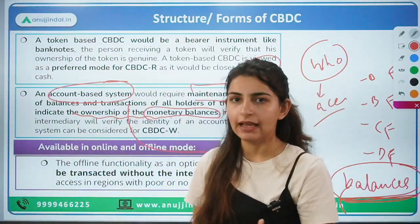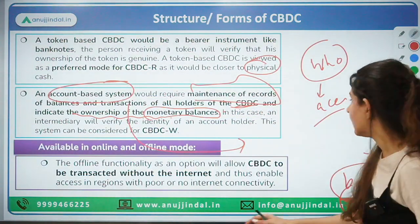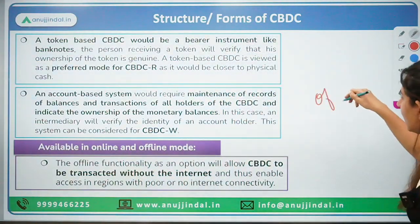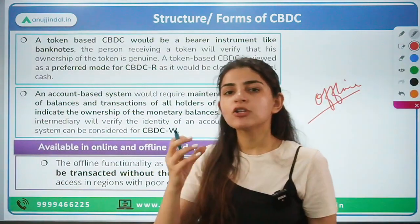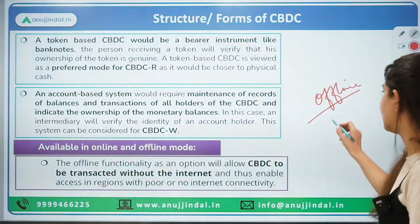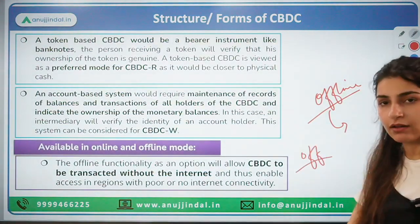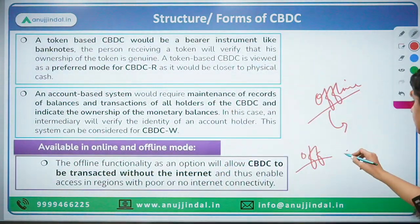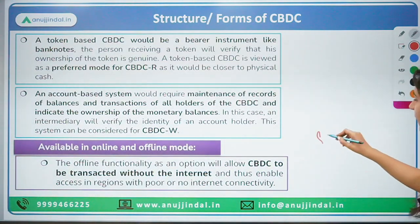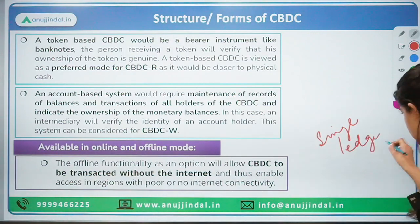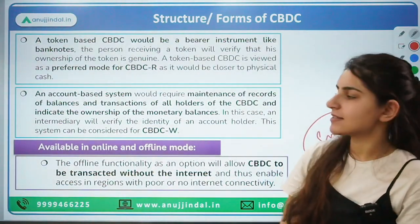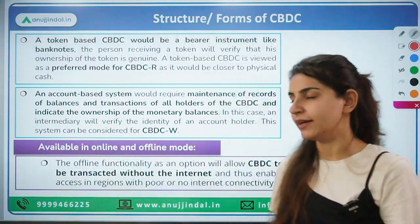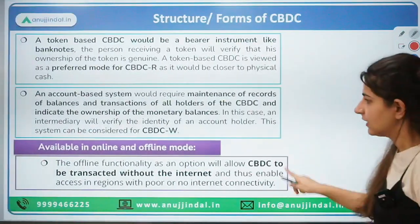CBDC is available in online mode and offline mode. However, in offline mode RBI faces a certain risk — it can lead to double debit. If a payment is made offline but not reflected when checked online, a single ledger may show a mismatch and cannot reflect the offline transactions made. This is one risk that exists; otherwise CBDC is available both offline and online.